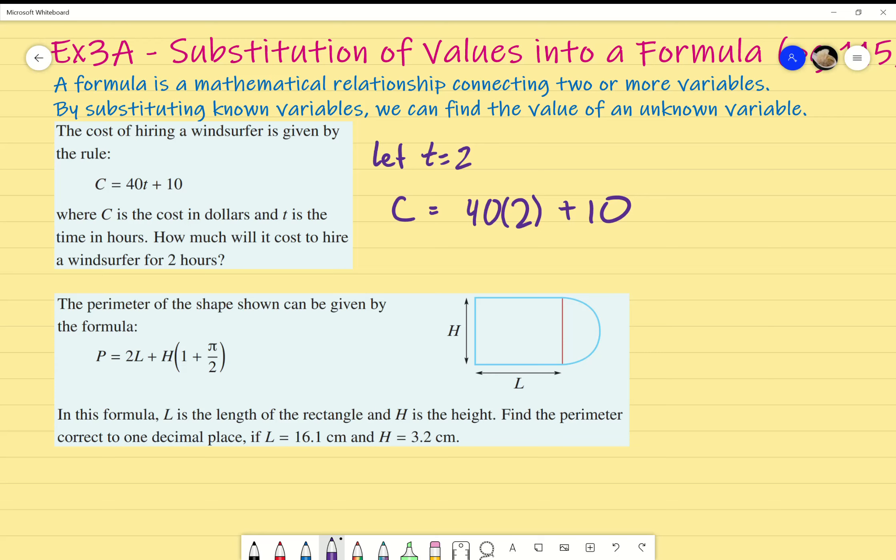Sometimes, if you just write so many operations, it gets really confusing. So, I like to write the brackets in there. 40 bracket 2. Just so we're super clear. Which I know 40 times 2 is 80. We still have to plus the 10. Plus the 10. Which gives us an answer of 90.